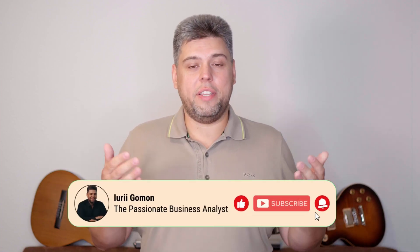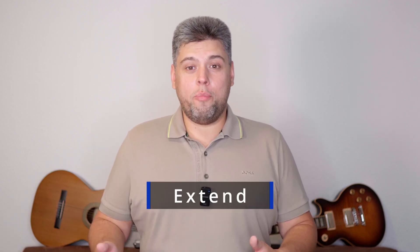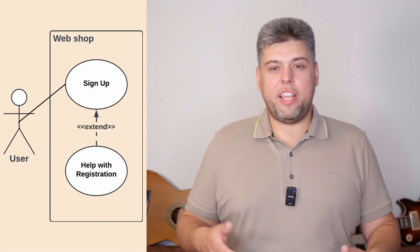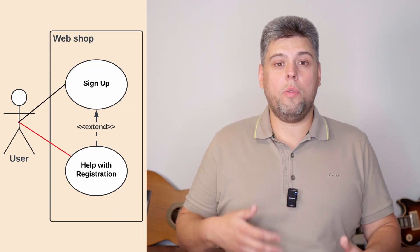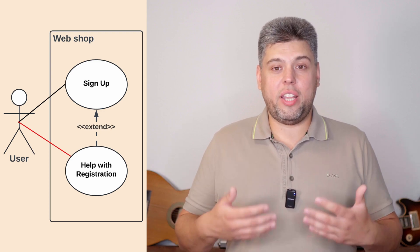The second and third types are exclusive to connect use cases and are called extend and include. Extend is a directed relationship that shows optional additional usage of a given use case. For example, if you want to create an account, you may go through the process immediately. But sometimes registration is complicated and you must go through the help section — in this case, help with registration extends the register an account feature. Extended use cases must make sense independently and may be directly associated with actors. Maybe you first read the full instructions and only then act — in such case you would both extend help to registration and associate help with an actor.